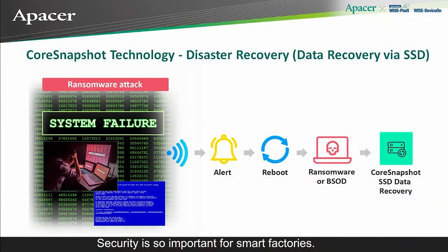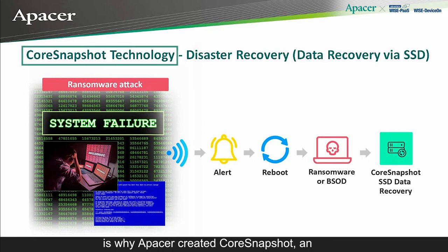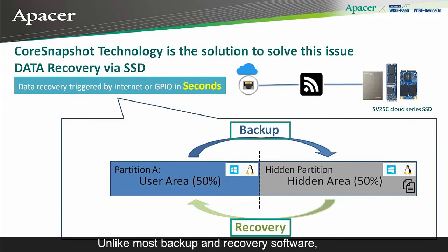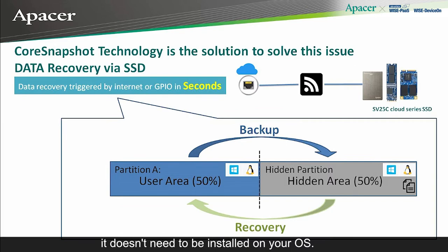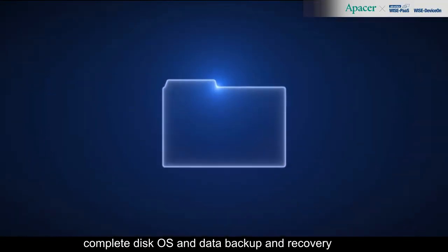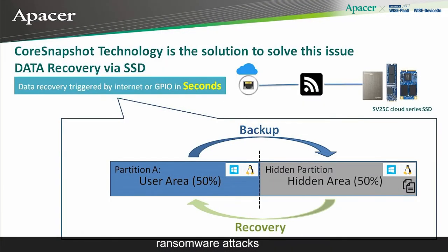Back to you, Frank. Security is so important for smart factories. In fact, many well-known manufacturers have fallen prey to ransomware attacks in the last few years. The need for upgraded security is why APACER created CoreSnapshot, an exclusive firmware technology. Unlike most backup and recovery software, it doesn't need to be installed on your OS. If you adopt CoreSnapshot technology, it can allow for complete disk OS and data backup and recovery in just a few seconds — meaning that ransomware attacks are useless.